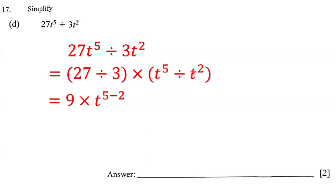Now, if we have two terms that have the same base and we're dividing those terms, then we must subtract the powers. So we have t to the power of 5 minus 2.